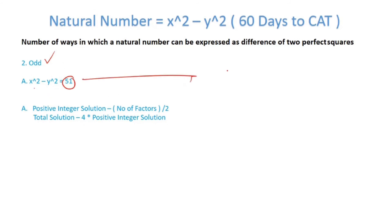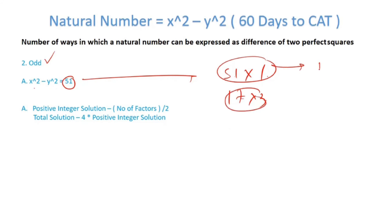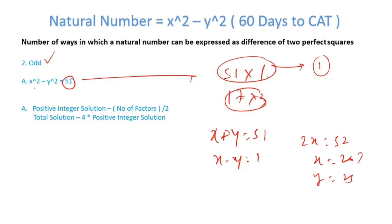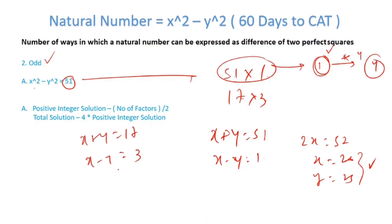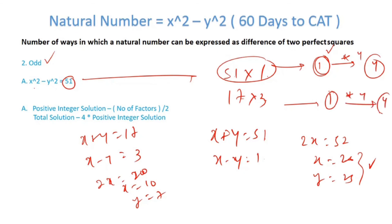Moving forward: whenever we have an odd number, for example x²-y² = 51. Now 51 can be written as 51×1 (odd×odd) or as 17×3 (odd×odd). For 51×1: x+y = 51 and x-y = 1, so 2x = 52, x = 26, y = 25 — that's one positive integer solution. For 17×3: x+y = 17 and x-y = 3, so 2x = 20, x = 10, y = 7 — again one positive integer solution. Each gives 4 total solutions, so total = 8 and total positive integer solutions = 2.